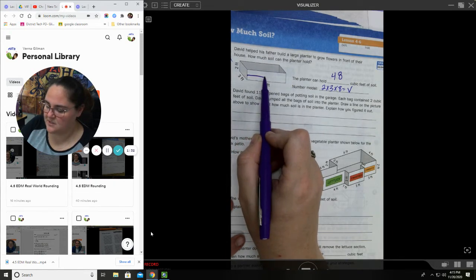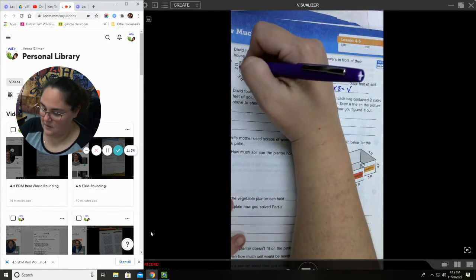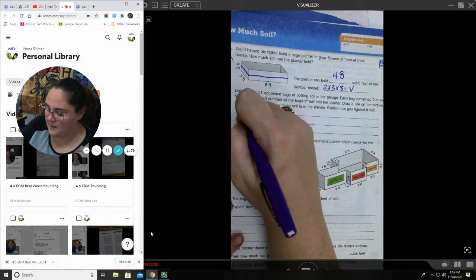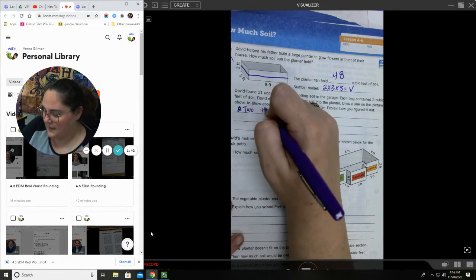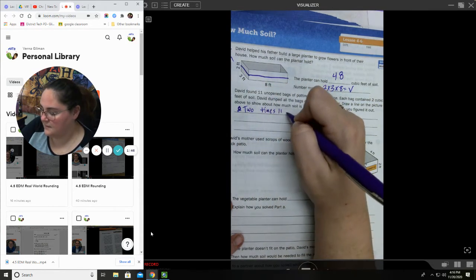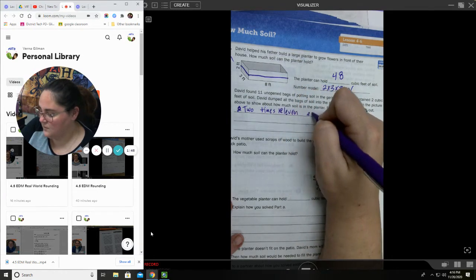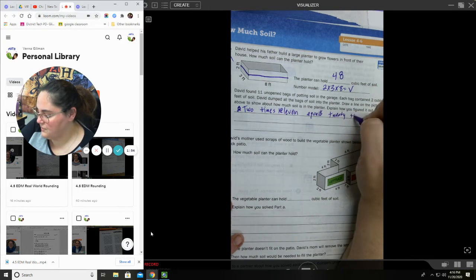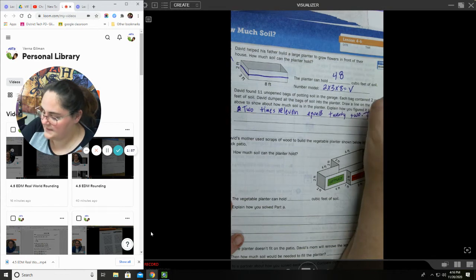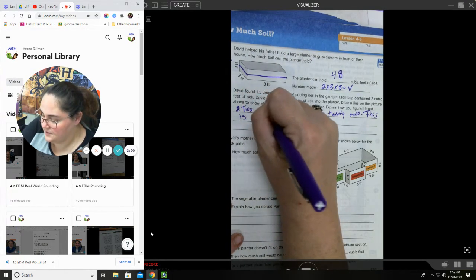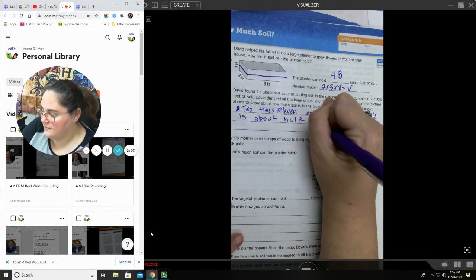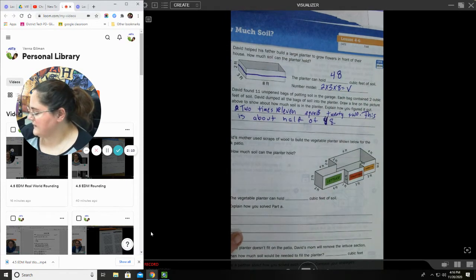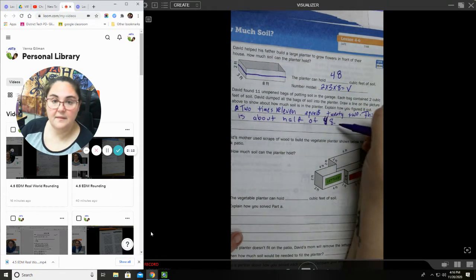So, 22 is close to being half. So, as far as my line, that's what I would draw. My reasoning, I would say 2 times 11 equals 22. This is about half of 28. I'm sorry, of 48. My bad. It's about half of 48. That's how I would do it. That's basically all you have to write.